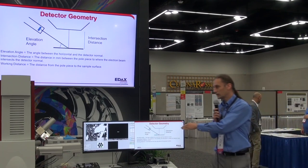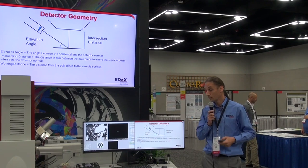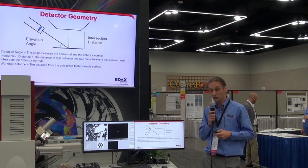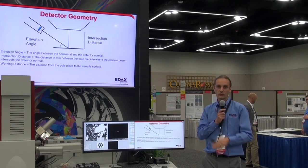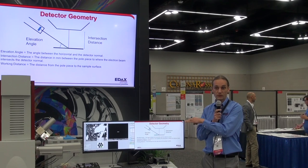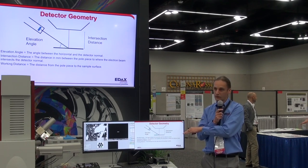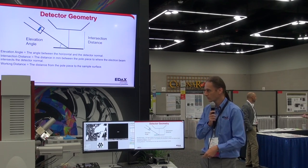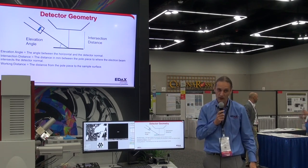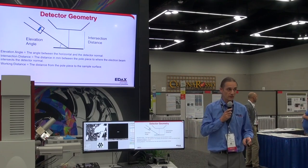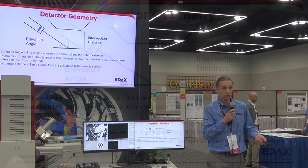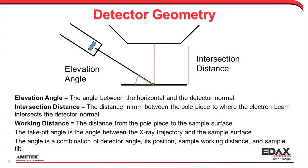On this microscope, the designed intersection distance is 15 millimeters, so we would want to be around 15 to have optimum collection. On other microscopes it may be 8.5, or on a FIB it may be 5 or even 4 millimeters — it changes system to system. In general, your working distance should be identical to the intersection distance to be at the sweet spot.